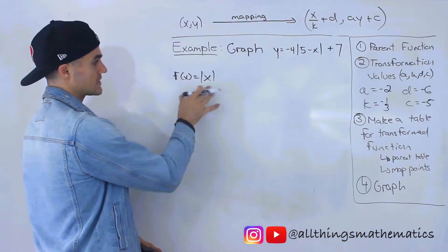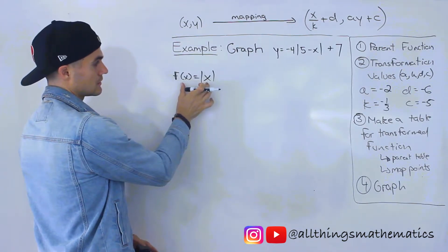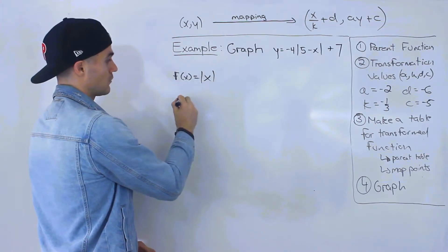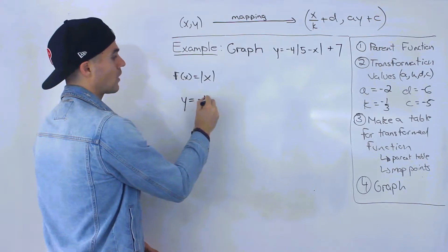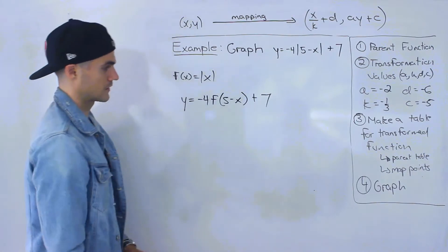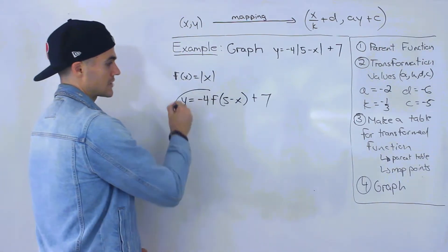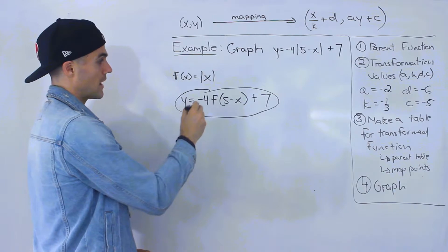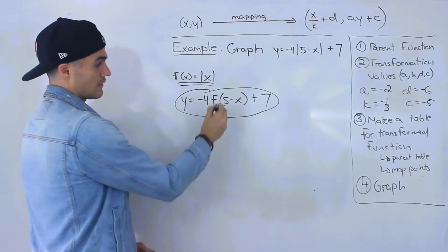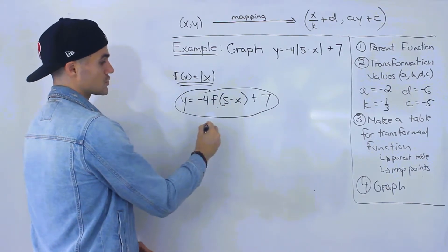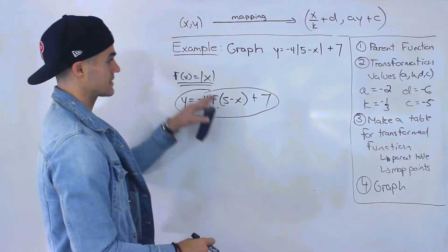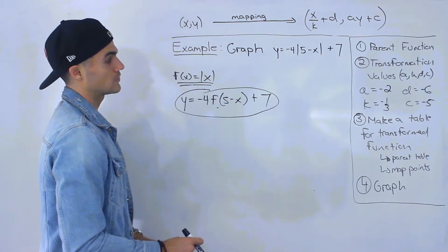Another way this question could have been asked is: if f of x equals the absolute value of x, then we would have to graph y equals negative 4 times f of 5 minus x, plus 7 — given in that general transformation format with the parent function separately given. This could be applied to any parent function: x squared, 1 over x, square root of x. In this case it's applied to absolute value of x.